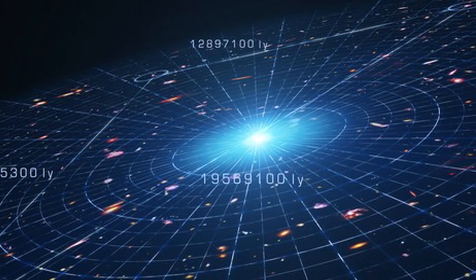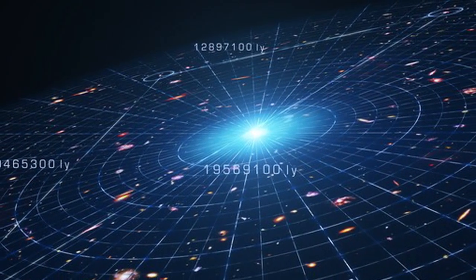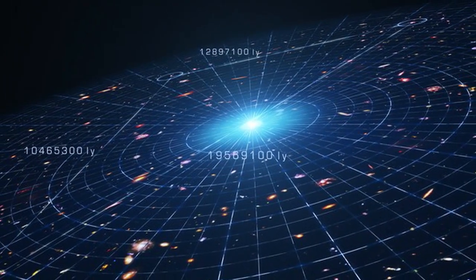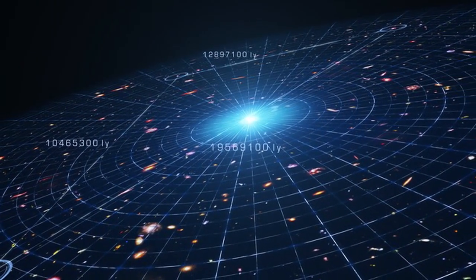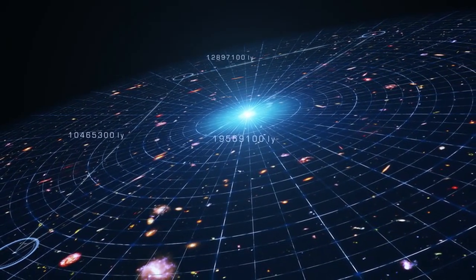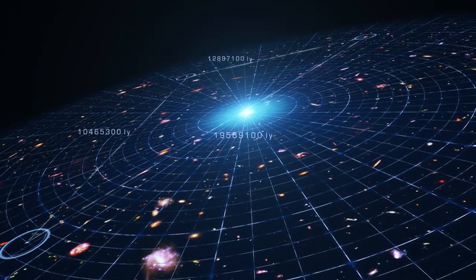This is the only explanation for why all the galaxies in the universe appear to be flying directly away from us in concentric shells. It's why the universal background radiation is the same, no matter what direction we look in the universe. It's also why even the farthest galaxies we see in the universe are fully formed.